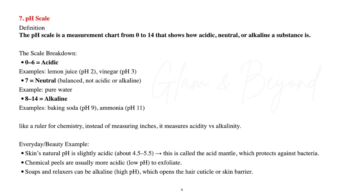Number seven: pH scale. The pH scale is a measurement chart from zero to 14 that shows how acidic, neutral, or alkaline a substance is. Zero to six is acidic — examples include lemon juice at about pH 2 and vinegar at about pH 3. Seven is neutral, balanced — an example is pure water. Eight to 14 is alkaline — examples include baking soda at about pH 9 and ammonia at about pH 11. Think of it like a ruler for chemistry: instead of measuring inches, it measures acidity versus alkalinity.